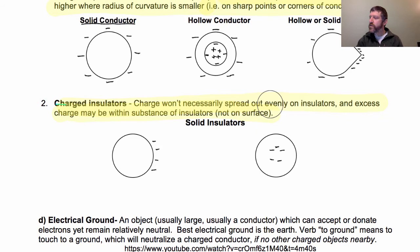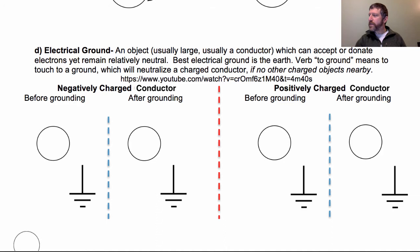Another very important concept that we have to cover is what is called electrical ground. An electrical ground is an object, usually a large object, and usually a conductor, which can accept or donate electrons, yet remain relatively neutral. So, how is that possible? Well, if you are large enough of an object, like the Earth, in fact, that is the best electrical ground, you can accept a bunch of electrons, and they're so spread out, it's like putting some red food coloring, a few drops of that, in the ocean. When you put red food coloring in the ocean, what color is the ocean? It's still blue.